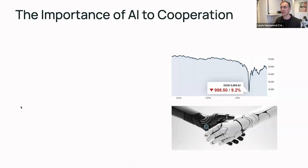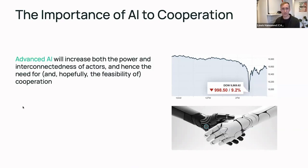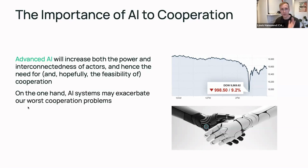The second claim is that AI is going to become increasingly important to the cooperation problems and opportunities we face. This is because advanced AI will increase both the power and the interconnectedness of actors, and hence the need for — but also hopefully the feasibility of — cooperation. There are two ways to view this: on the one hand, AI systems might end up exacerbating some of our worst cooperation problems.